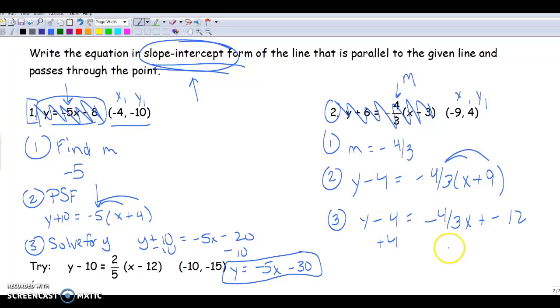Once I have that, I add 4 to my negative 12, and I get y equals negative 4 thirds x minus 8. All right, so that's going to be the main idea of the lesson.